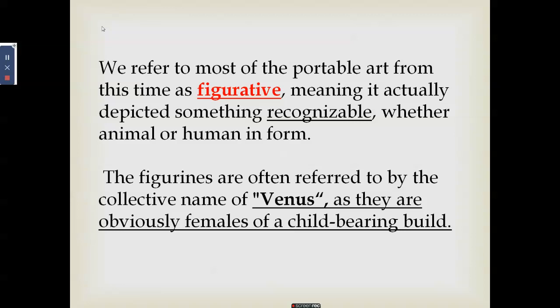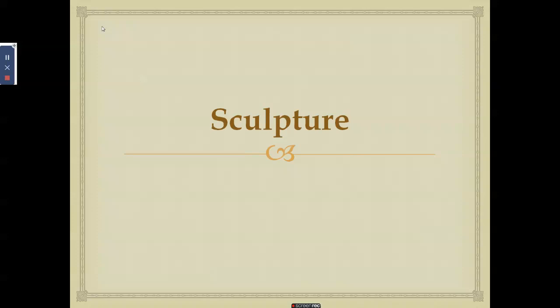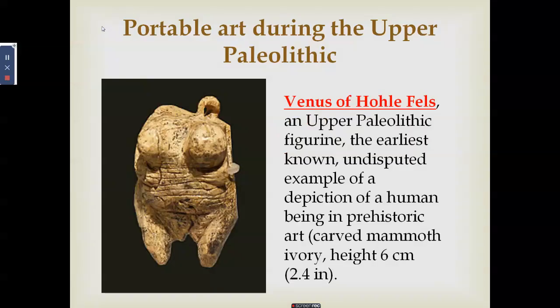Portable art forms can also be described as figurative, meaning something recognizable — either an animal or a human form. Most of these figurines are collectively known as Venus figures, as they are obviously female with a childbearing build. An example is the Venus of Hohle Fels, the earliest known undisputed depiction of a human being in prehistoric art. It is carved in mammoth ivory and measures only 6 centimeters, or 2.4 inches.